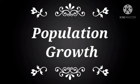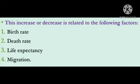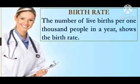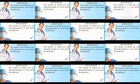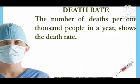Let's start with the first point, that is population growth. Sometimes there is a decrease in population and at other times there is an increase. The increase or decrease is related to the following factors. First is birth rate — the number of live births per 1000 people in a year shows the birth rate. Second is death rate — the number of deaths per 1000 people in a year shows the death rate.